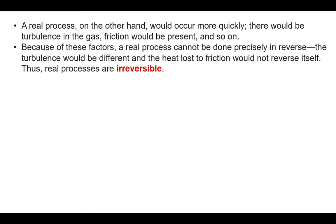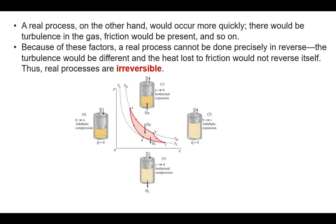Because of these factors, a real process cannot be done precisely in reverse. The turbulence would be different and the heat loss to friction would not reverse itself, because real processes are irreversible. They consist of irreversibilities like friction, turbulence, and heat loss. The Carnot engine consists of two isothermal processes.